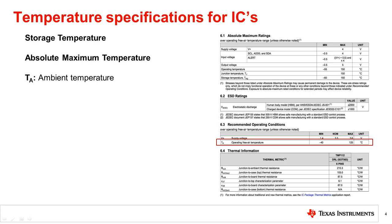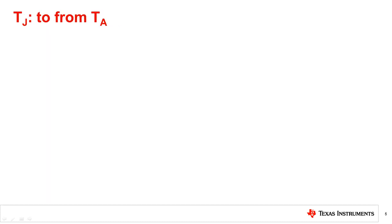Lastly is TJ, or the junction temperature is the maximum internal temperature of the device at which the device can operate reliably. While each temperature specification is important for a reliable operation of an IC, junction and ambient temperature need to be carefully considered when designing a system.